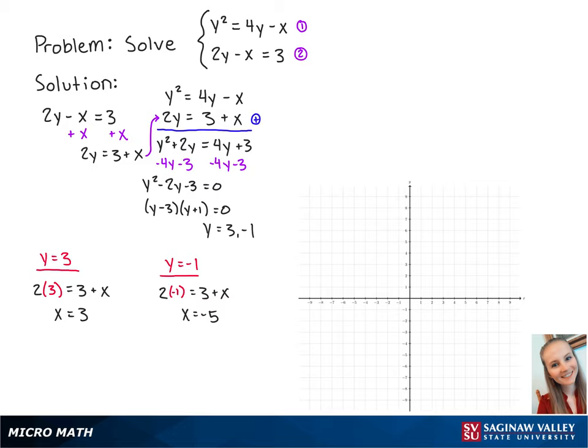Now that we have our x and y values, we can see that the intersecting points are at (3, 3) and (-5, -1). And this is the solution to the problem.